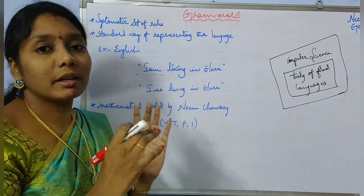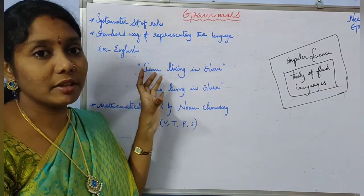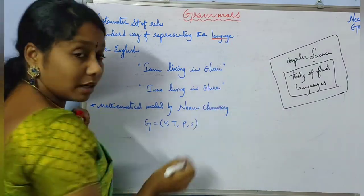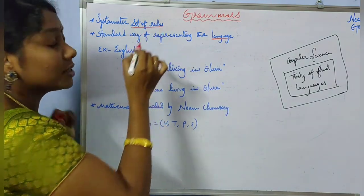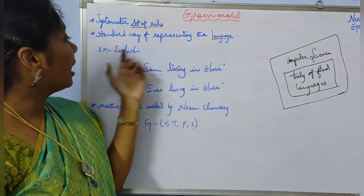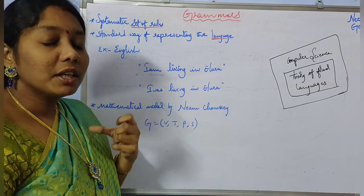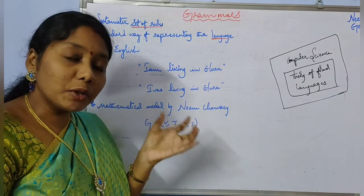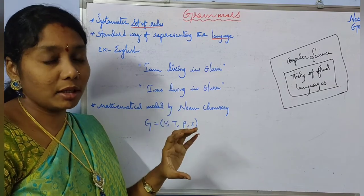For example, if you consider the English language, it is the way of representing the language. A systematic set of rules used to represent a language — that is called grammar. So for English language, we have a set of rules and that is what we call grammar.